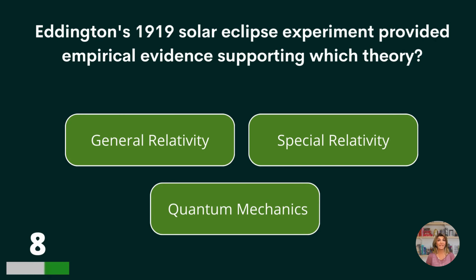Eddington's 1919 solar eclipse experiment provided empirical evidence supporting which theory? General relativity, special relativity, or quantum mechanics? General relativity.